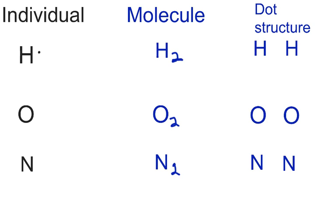On an individual basis, we make sure we don't put more than two dots on each side. So we put one, two, three, four, five, six dots for oxygen. And nitrogen with five valence electrons, we put one, two, three, four, five. Make sure you don't put more than two per side on an individual basis.